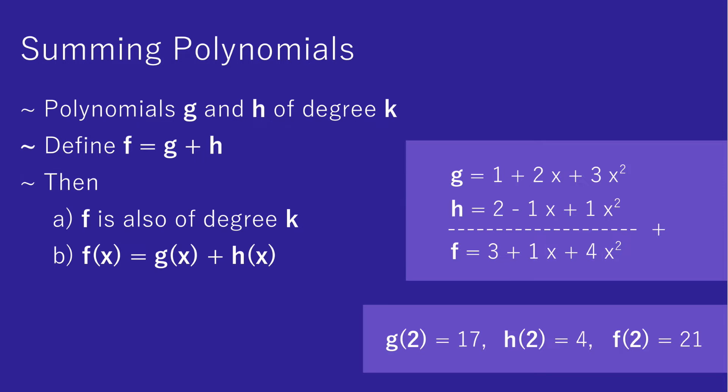Here, g evaluates to 1 plus 4 plus 12, which is 17. And h evaluates to 2 minus 2 plus 4, which is 4. And indeed, f becomes 3 plus 2 plus 16, which is 21, which is also the sum of 17 and 4.